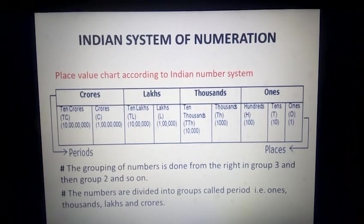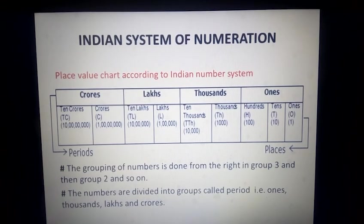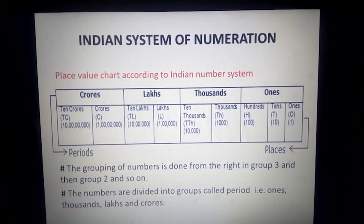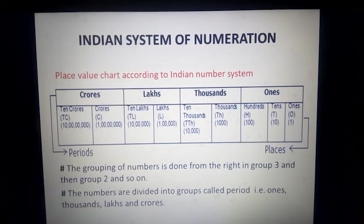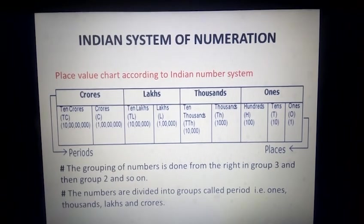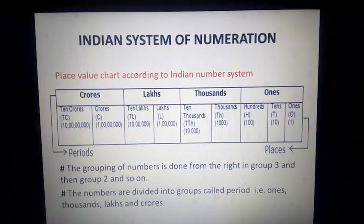So first we group into three digits. As you can see, there is a period named ones, and in ones there are three places: ones, tens and hundreds. And after that, there is the period thousands, in which you have two places: thousands and ten thousands. And again the period lakhs, in which we have two places: lakhs and ten lakhs. And again crores, in which we have crores and ten crores. So as you can see, this is the actual scenario of grouping the number according to the periods.